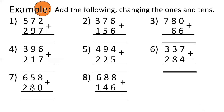Now let's go to our examples: add the following, changing the ones and the tens. We just learned about changing the ones, but here we also have changing the tens. Number 1: 572 plus 297 — 2 plus 7 is 9. 7 plus 9 is 16, bring down 6, carry 1 to hundreds. 5 plus 2 is 7 plus 1 is 8. Answer is 869.